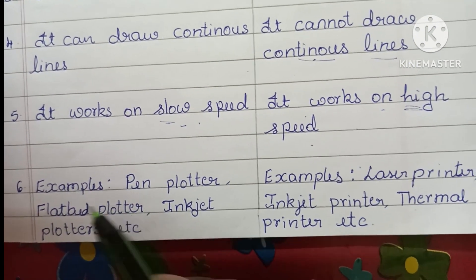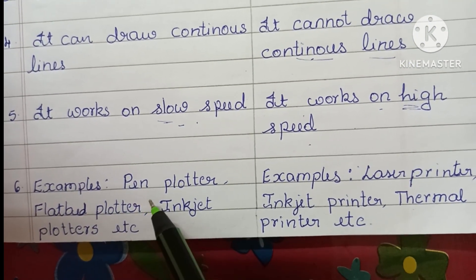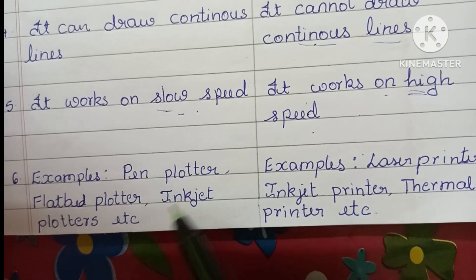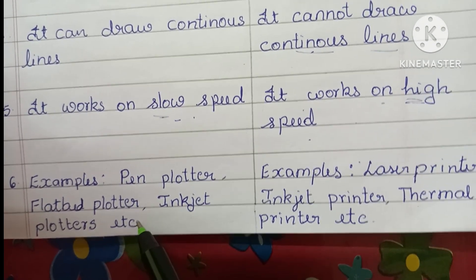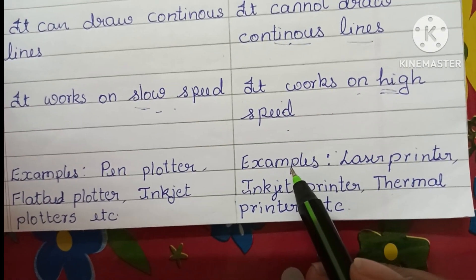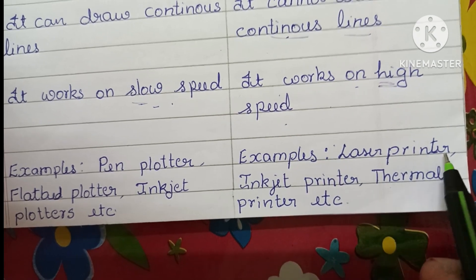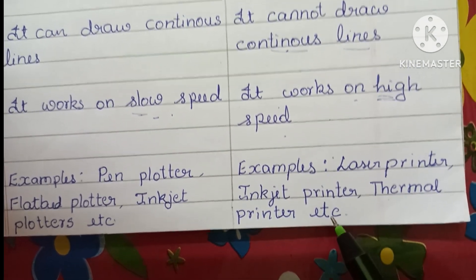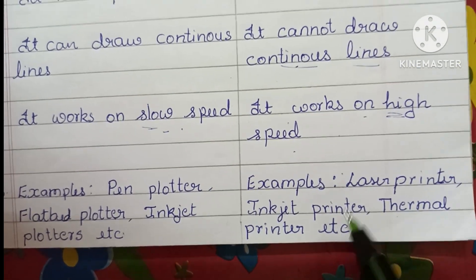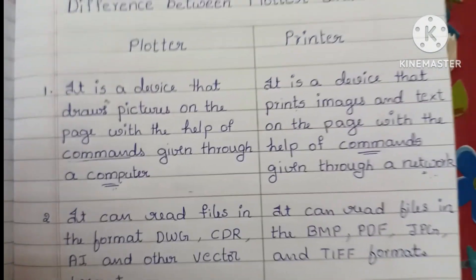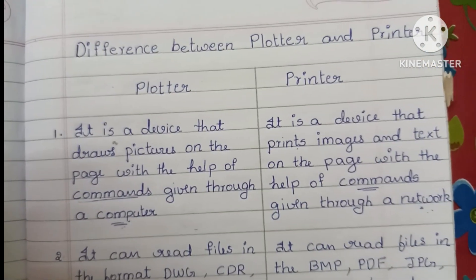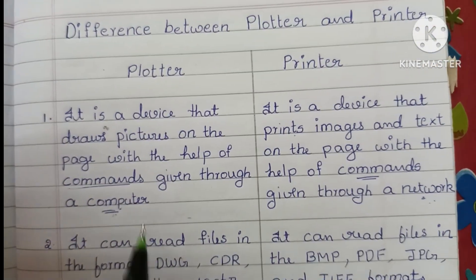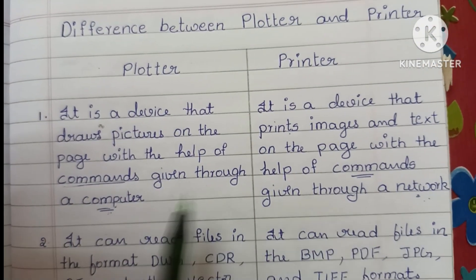The sixth difference is examples. Examples of plotters include drum plotter, flatbed plotter, and inkjet plotter. Examples of printers include laser printer, inkjet printer, and thermal printer.